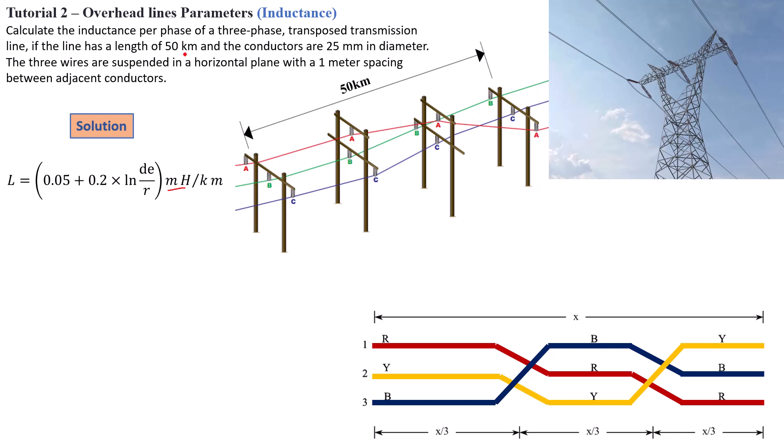So now if you've got 50 kilometers, then whatever answer you get here, you must multiply it by 50 so that you can get the inductance of your transmission line based on the distance where your transmission line is running. But we've got a few parameters here that we need to make sense of before we can actually calculate this inductance.